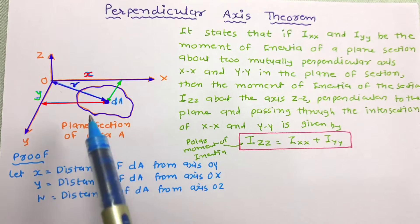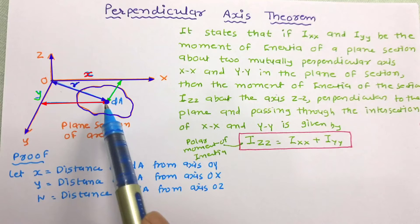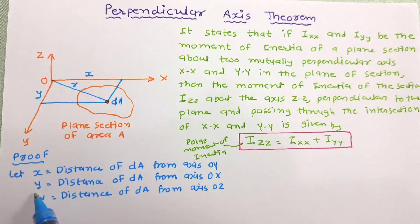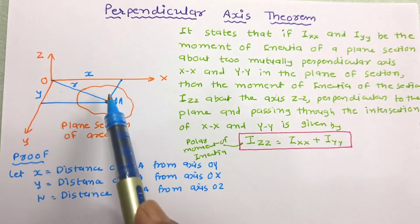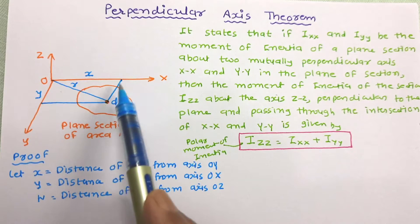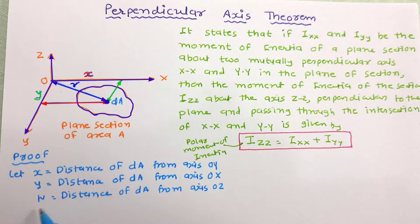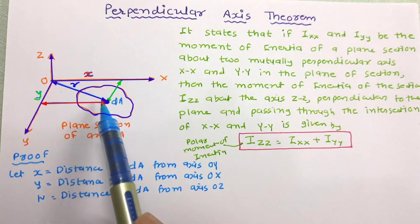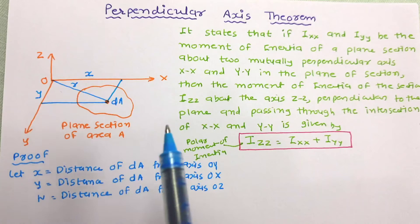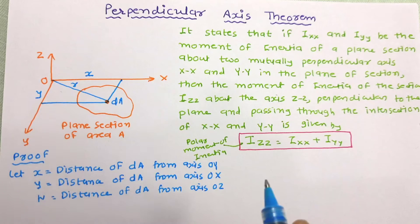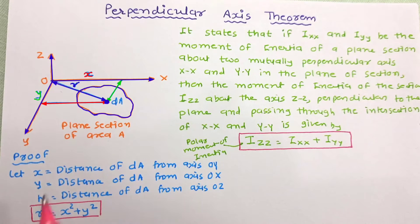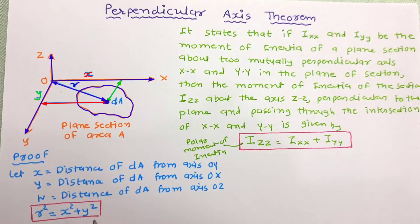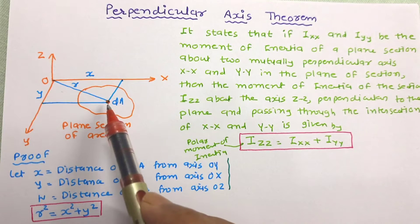Here, X is the distance of DA from the OY axis, Y is the distance of DA from the OX axis, and R is the distance of the area DA from the OZ axis. So from the figure we can write: R² = X² + Y².